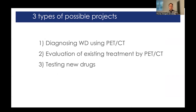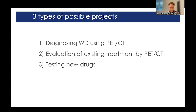Today I'm going to talk about three possible projects we use. One is to diagnose Wilson disease using PET. The second is the evaluation of different treatments by PET. And finally, the testing of new drugs. I will not mention in the interest of time the use of PET in animals, but we do investigate both rodents and also larger animals like pigs.